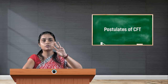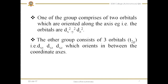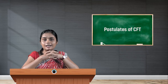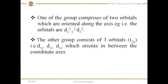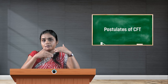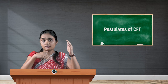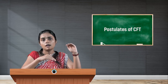The other group consists of 3 orbitals — dxy, dyz, and dxz — which orient in between the coordinate axes, referred to as t2g. Here you can see t2g: the dxy orbital is oriented between the coordinate axes x and y, the dxz orbital is oriented between x and z. These are the 2 sets of d orbitals. This important classification into eg and t2g is very essential in order to study CFS, because when we discuss CFS we refer to t2g and eg rather than individual orbitals.